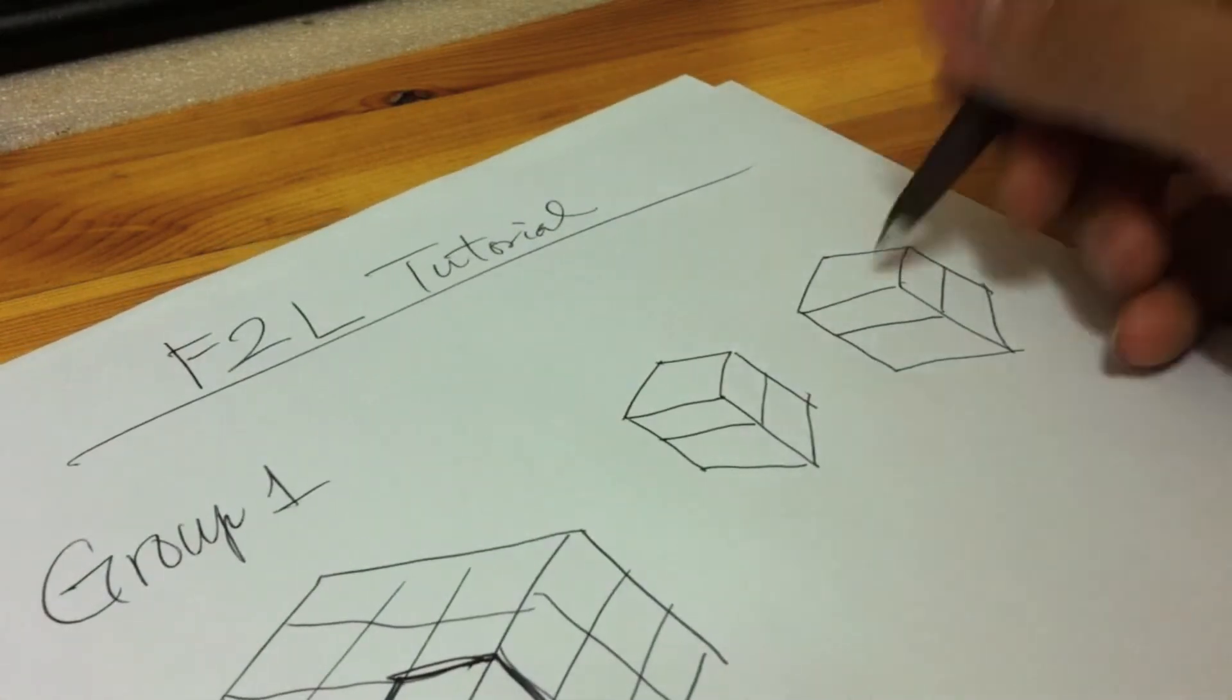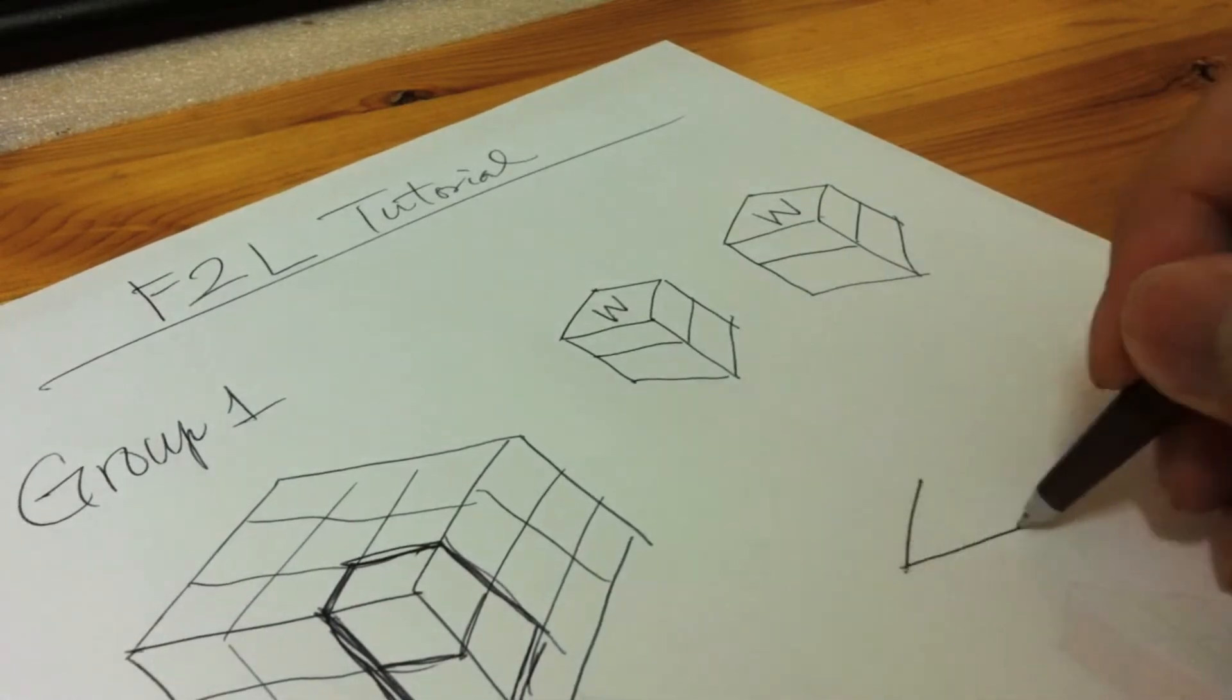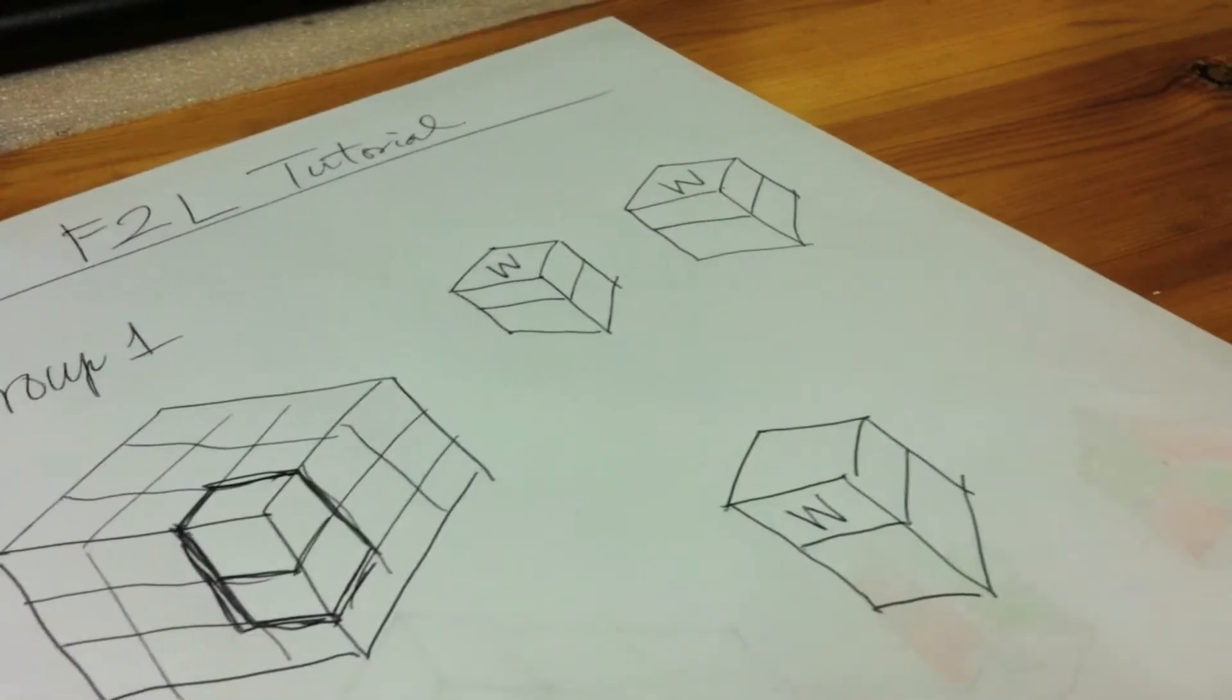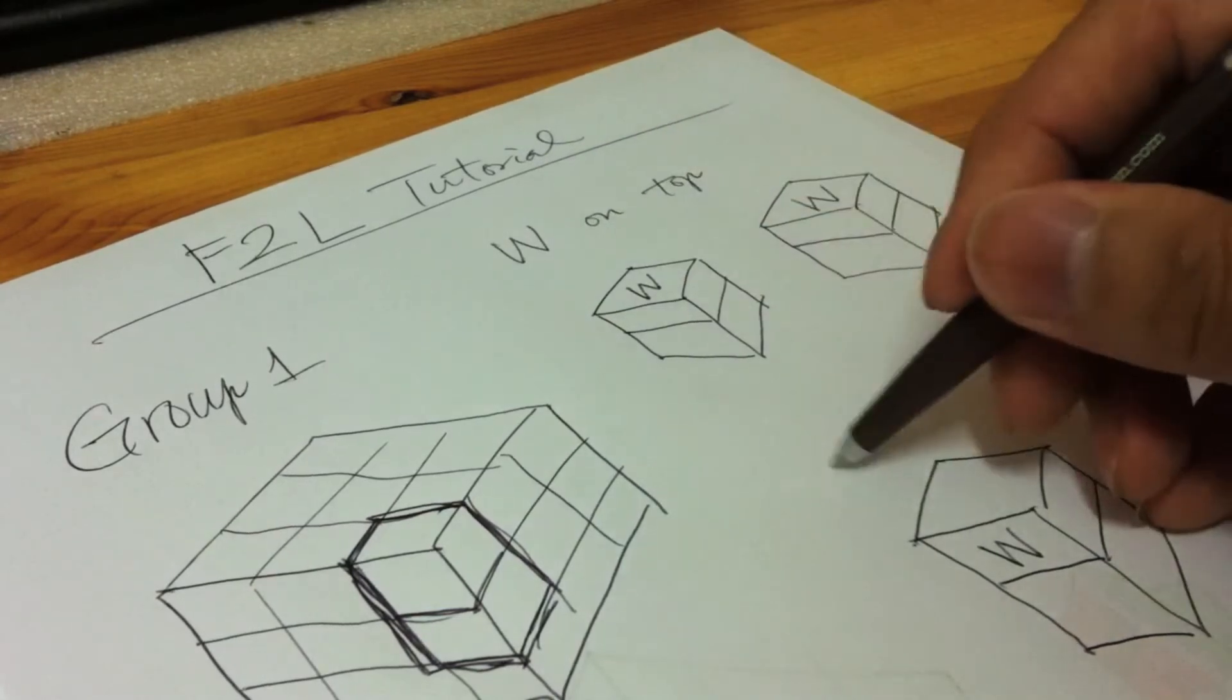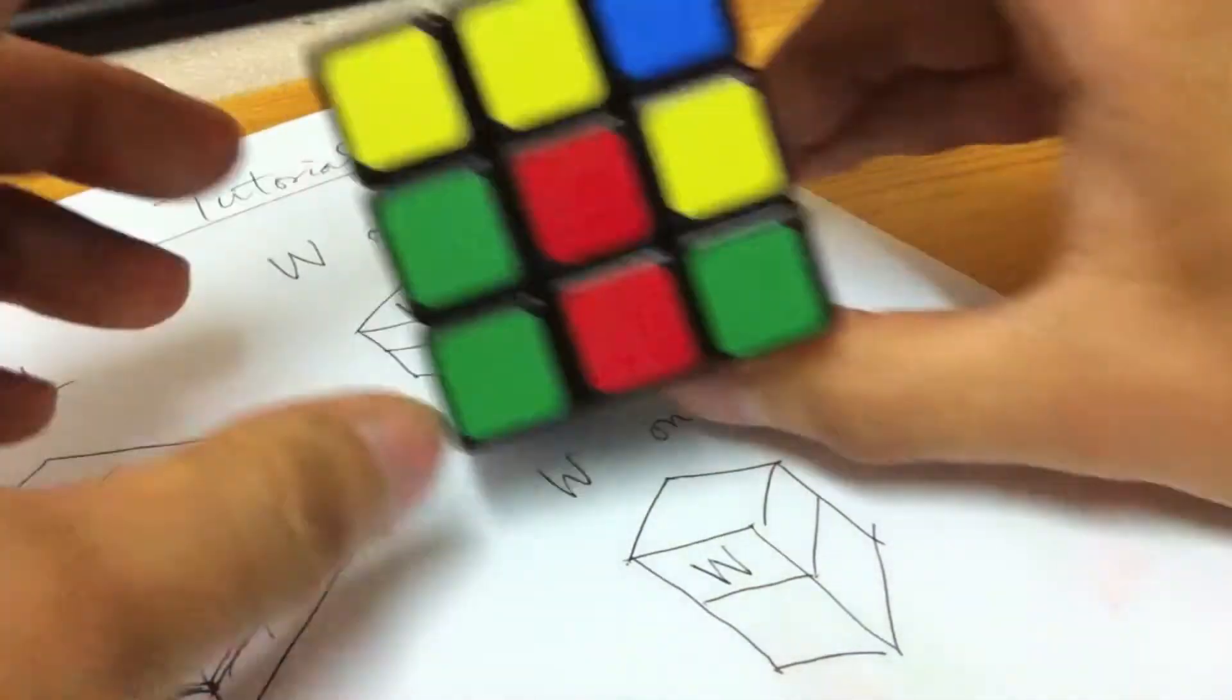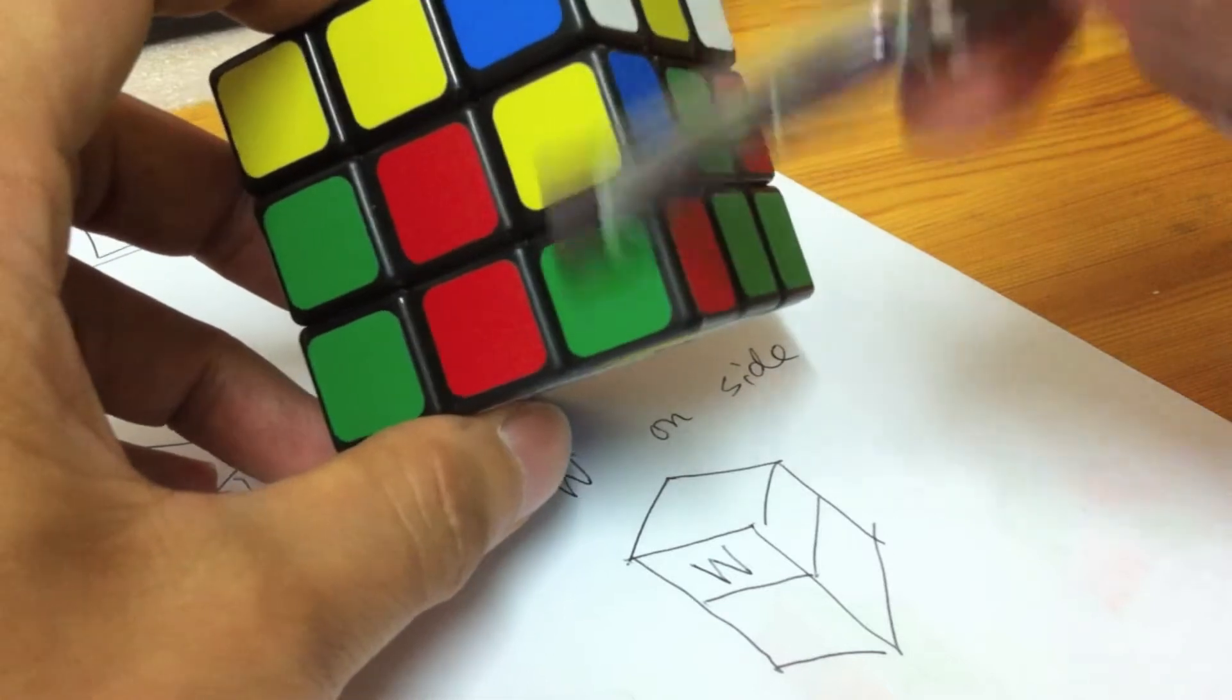It's possible that the white color can be on the top, and it's also possible that the white color can be on the side. So I can classify them by saying this is white on top and this is white on side. Physically, you can have this example: here is the red and green faces, and in the middle there's the red-green column.